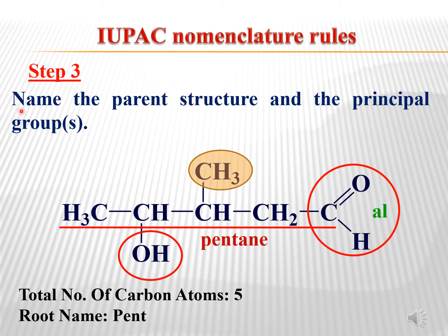Let's start with step 3. In the third step we have to name the parent structure and the principal group. Here you can see the structure has a total of 5 carbon atoms, so our root name will be 'pent.' The aldehyde is the principal group, so for aldehyde we use the suffix 'al.'